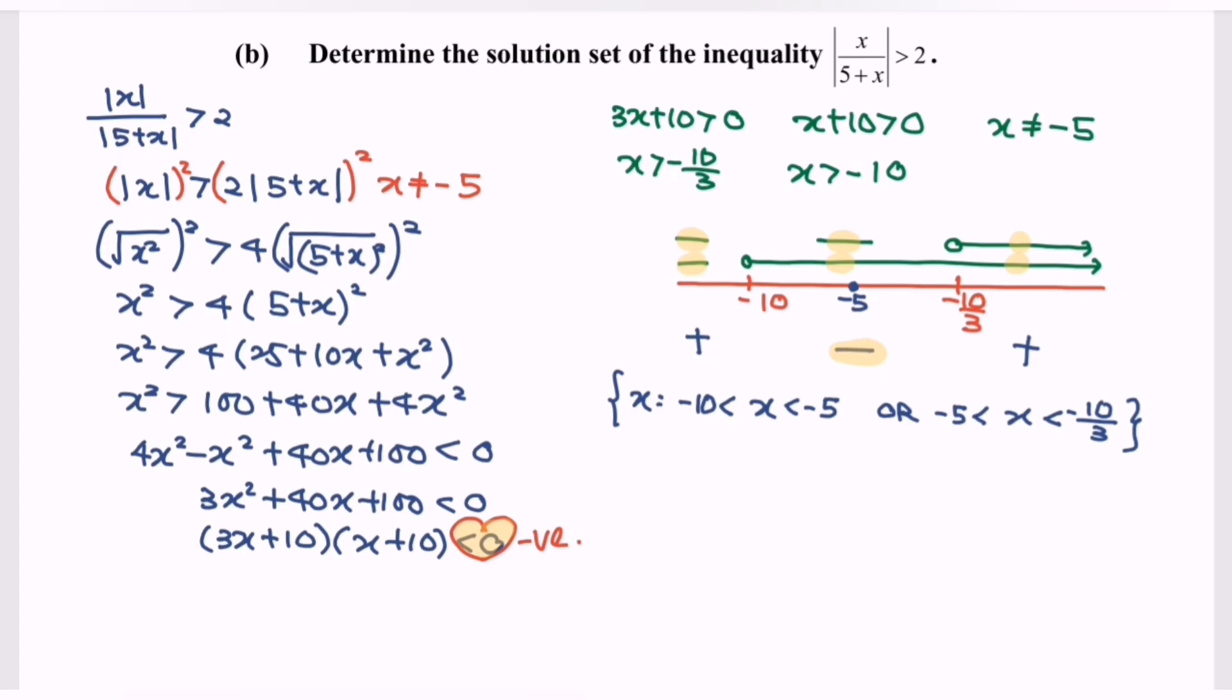Or we can write our answer in interval form if the question requests. So we have negative 10 until negative 5, union negative 5 until negative 10 over 3, where negative 10, negative 5, and negative 10 over 3 are not included.